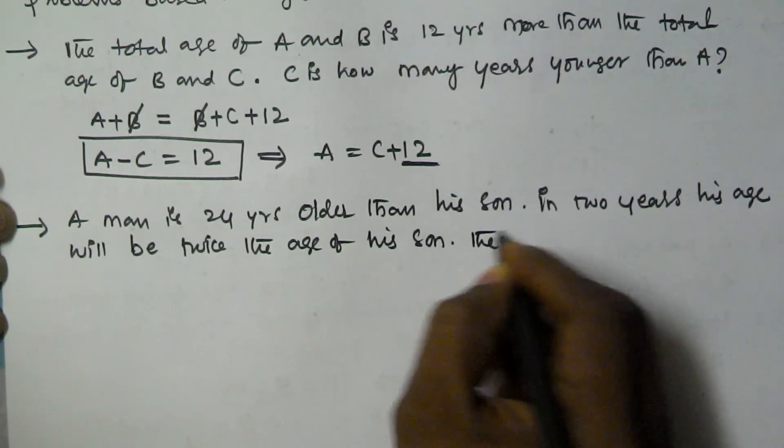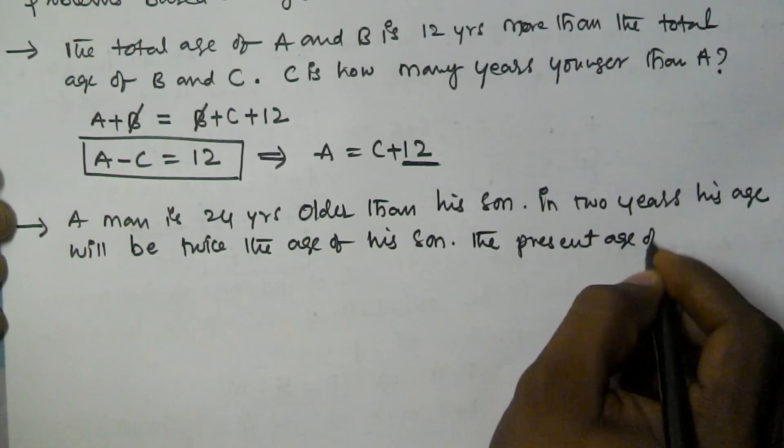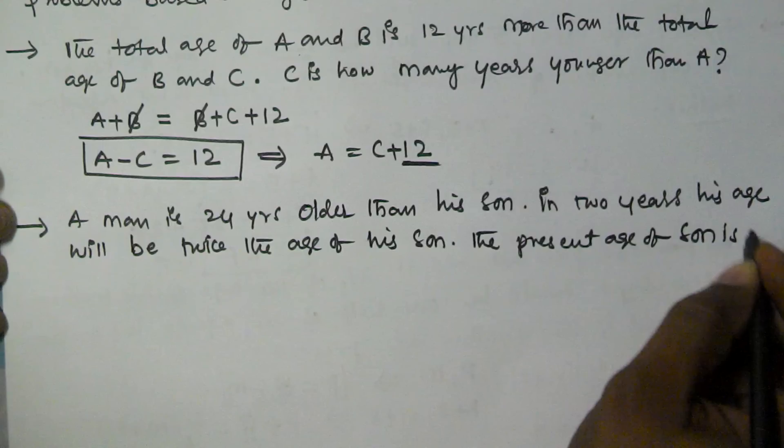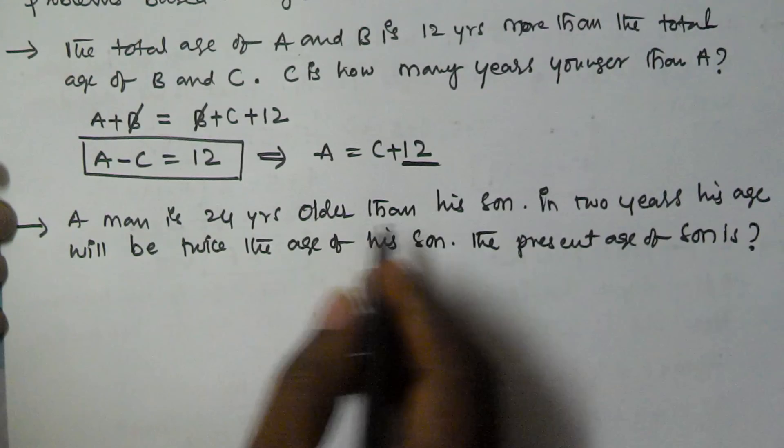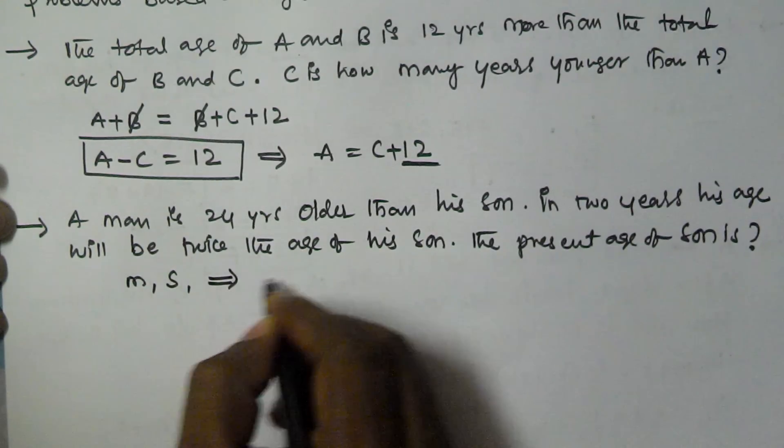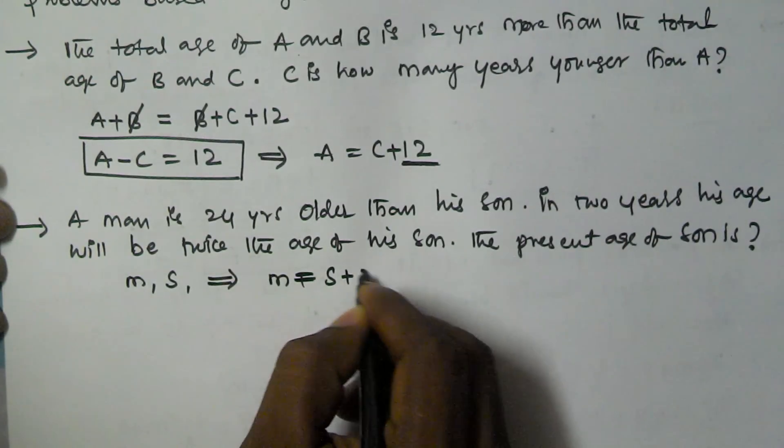The present age of the son is... A man is 24 years older than the son. If man's age is M and his son is S, then man's age is equal to son's age plus 24.